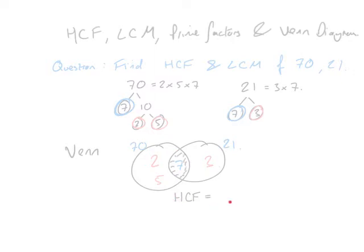So when we're given the highest common factor, that number is going to go straight in the middle, or the prime factors of that number go straight in the middle.